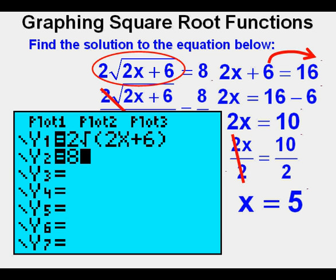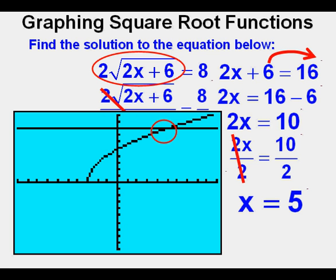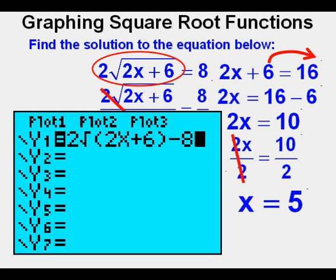We can also solve by graphing. Enter the left side of the equation into y1 and the right side into y2. Press graph. We see the solution here where the curve intersects the line. We find the exact solution by pressing 2nd, trace, 5, enter, enter, enter. We see the solution here at x equals 5, which corresponds to what we calculated earlier.